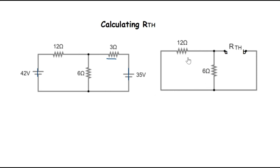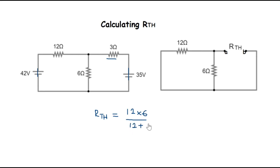Looking at these two resistances, you can see that they are in a parallel connection. So their effective resistance, which is R_TH, would be equal to the product of 12 and 6 divided by their sum. When I do this, this will give me the value of the Thevenin resistance to be equal to 4 ohms. We have the Thevenin resistance equal to 4 ohms. Now let's calculate for the Thevenin voltage.